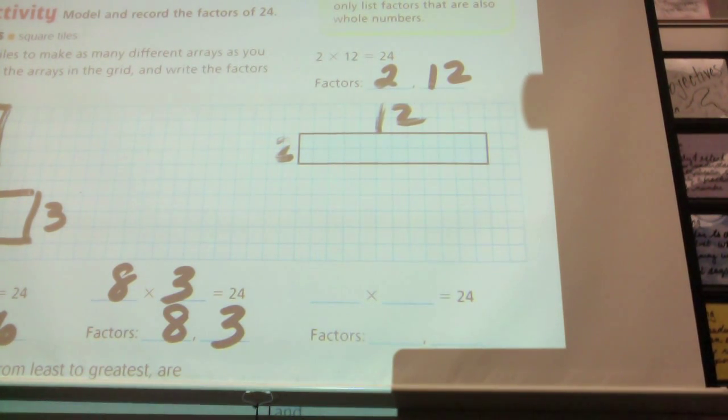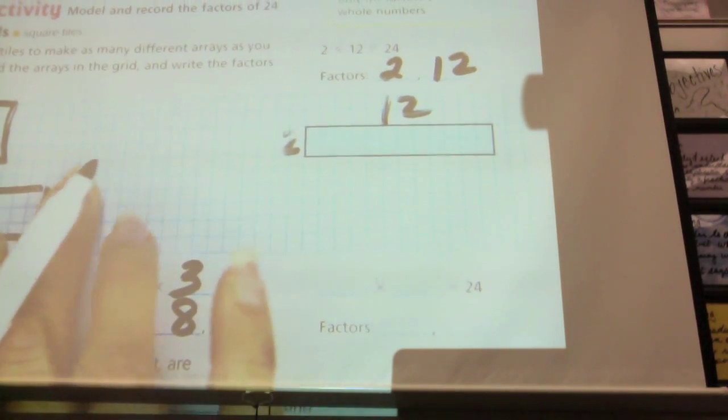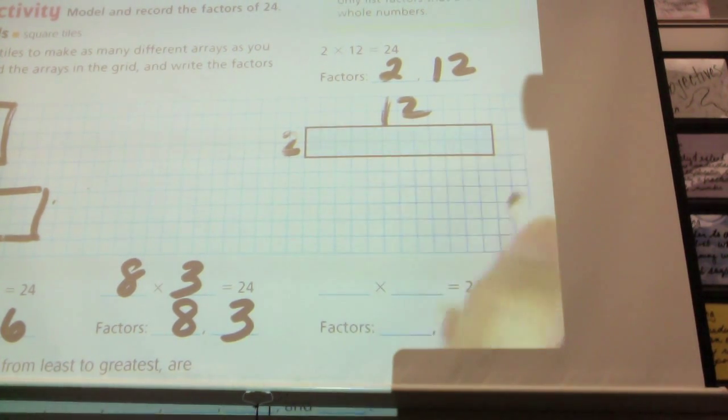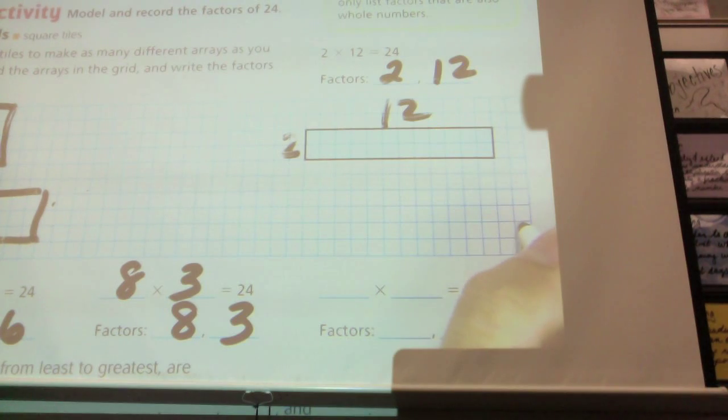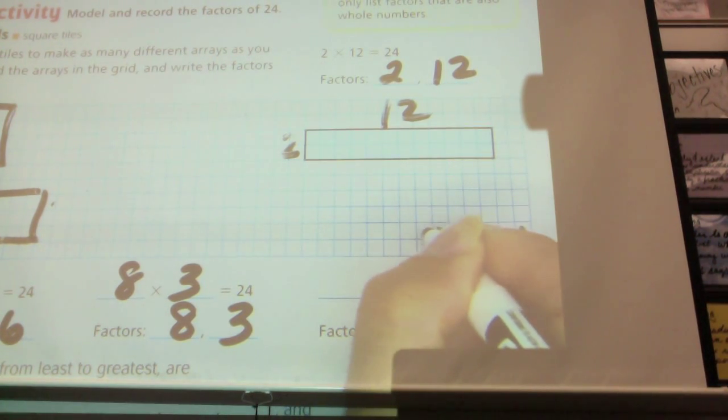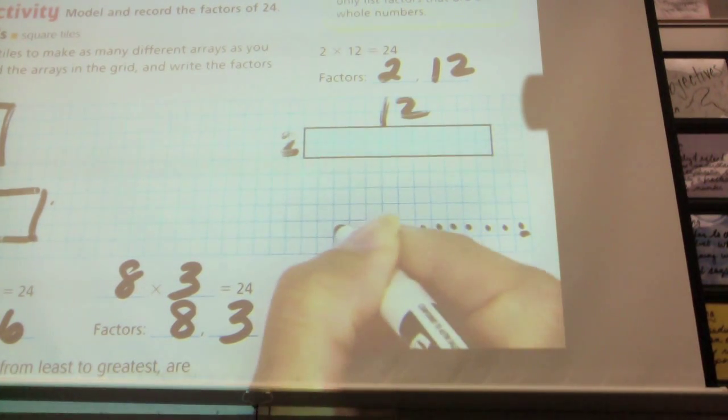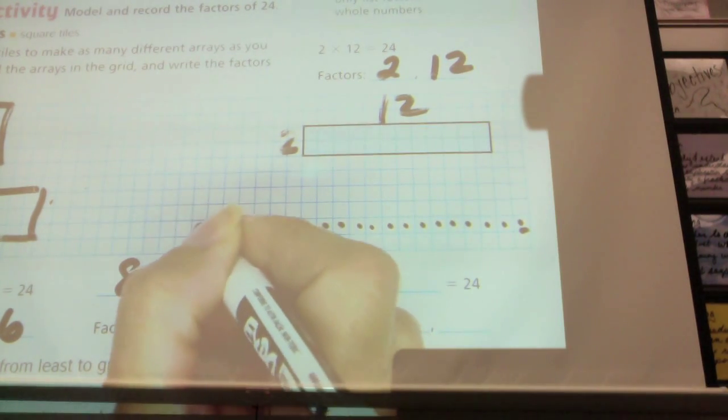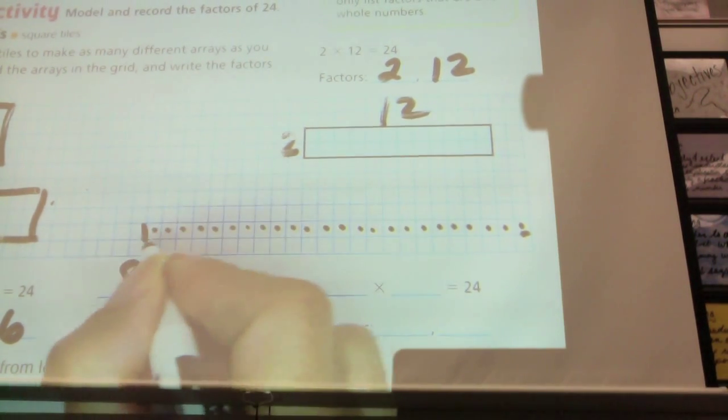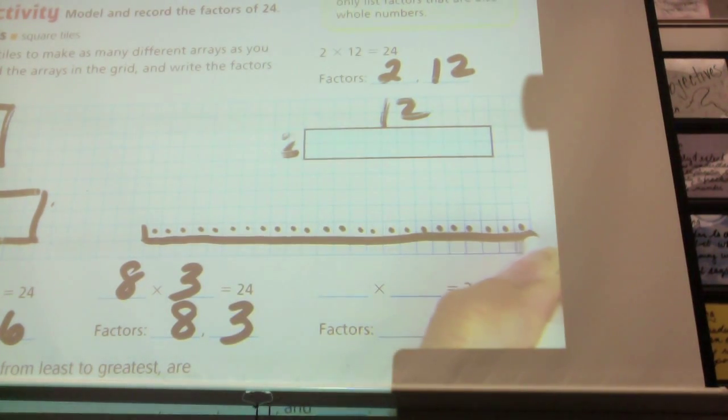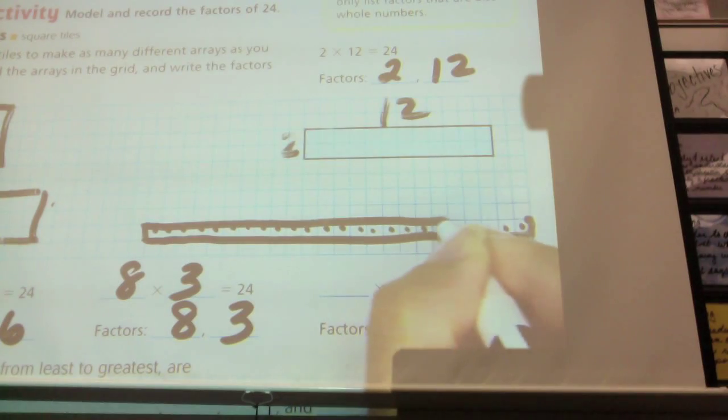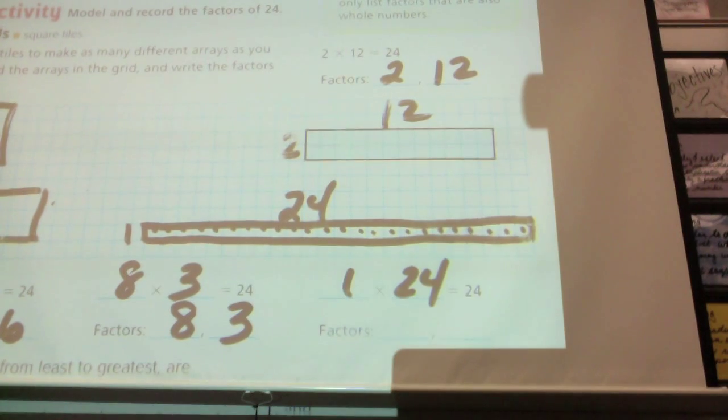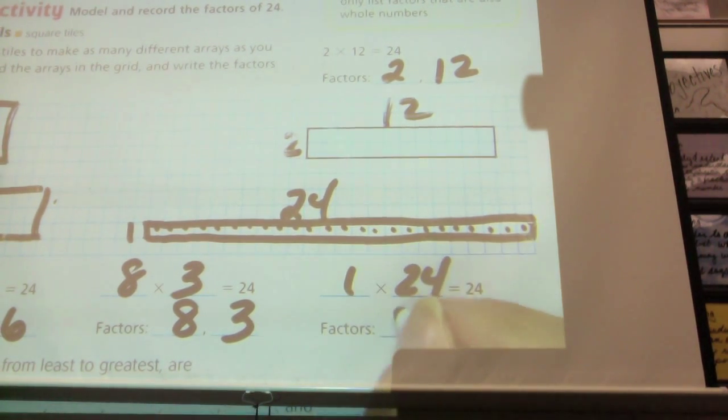And one more. What's my one more I can do, Aidan? Oh, 1 and 24. Let me see if I can get here. I'm going to count first. 1, 2, 3, 4, 5, 6, 7, 8, 9, 10, 11, 12, 13, 14, 15, 16, 17, 18, 19, 20, 21, 22, 23, 24. Phew! So, it's that whole thing. 1 and 24. 1 times 24. What are my factors? 1 and 24.